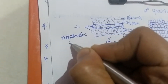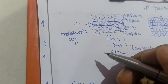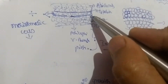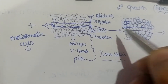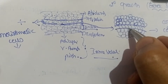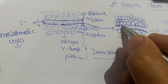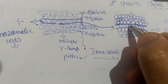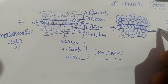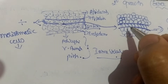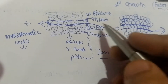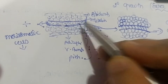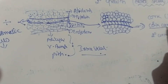These meristematic cells have the ability to form secondary growth. This layer de-differentiated and formed meristematic cells. These meristematic cells together develop a layer called cork cambium. This layer is developed by the meristematic cells, which resulted from the de-differentiation of parenchyma cells present in the cortical region. So what we form is the cork cambium.